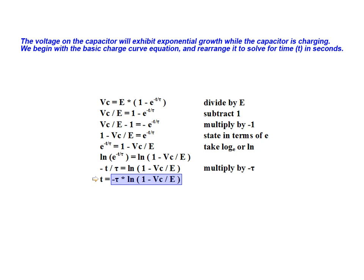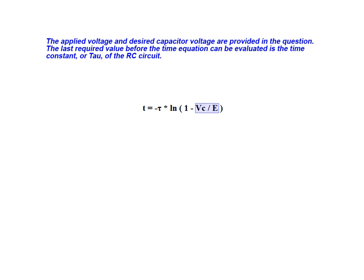We now have a relationship that allows us to determine the time it takes to reach a desired capacitor voltage. The applied voltage E and desired capacitor voltage VC are provided in the question.